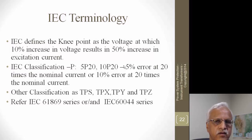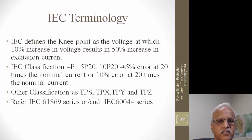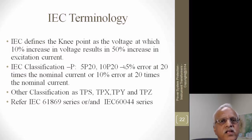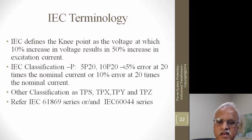IEC has other classifications: 5P20 means five percent error when the current is 20 times the nominal secondary current; 10P20 means 10 percent error at 20 times nominal current. There are more detailed IEC classifications — TPS, TPX, TPY, and TPZ — which are not covered here in detail; please refer to the IEC standards documents for explanation.